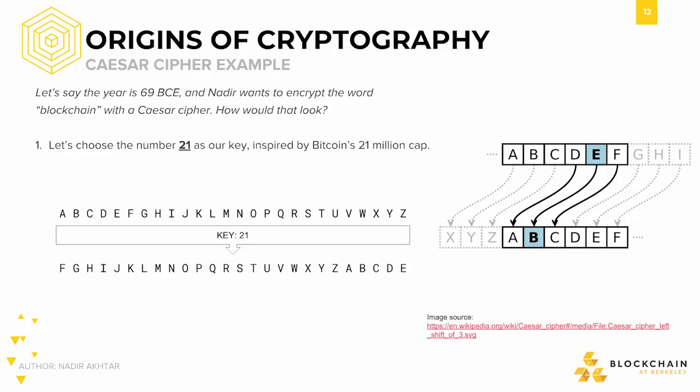As you can see, there are two rows of 26 letters. In the top row are the letters A through Z as normal. In the bottom row, every letter has been shifted to the right 21 times. Instead of starting with A, this row starts with F and ends with E. Essentially, the first letter now corresponds to the sixth letter in the alphabet, the second letter to the seventh, and so on.